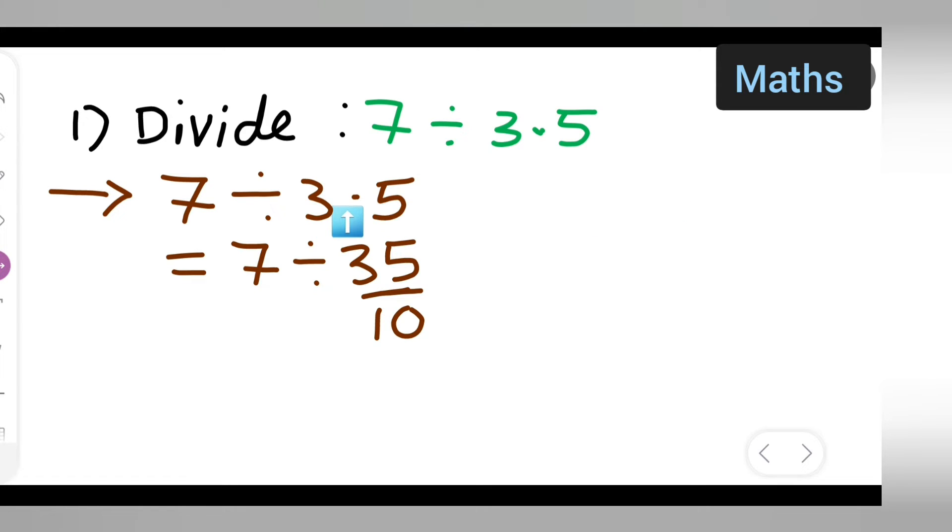So this is the 10th place, right? Only one decimal point is there, so upon 10 will come. After that, how are you going to write this? You'll have to write it like this: 7 multiplied by 10 upon 35. So when I'm dividing 7 by this term, you have to multiply and then take the reciprocal of this.